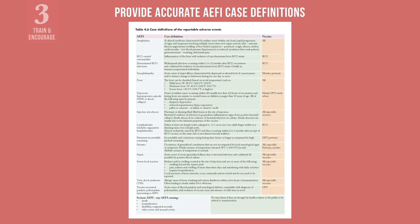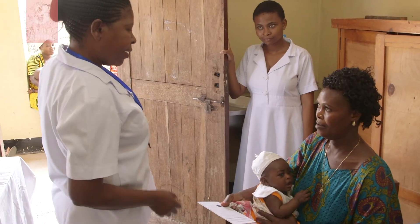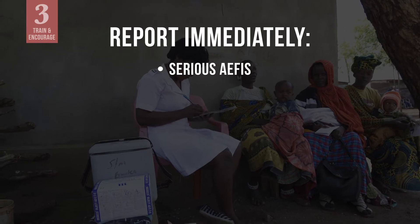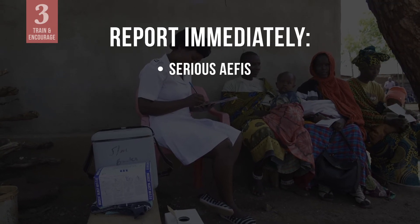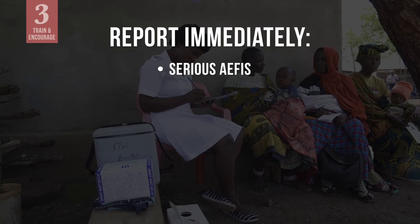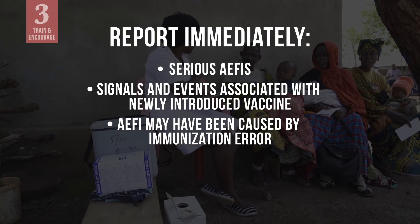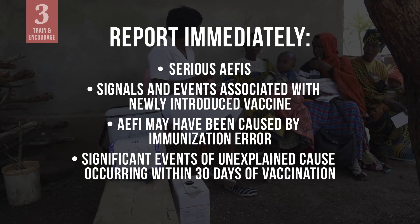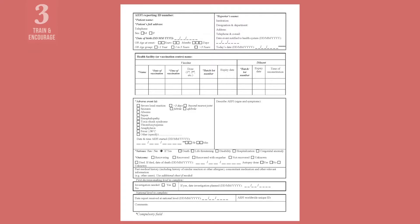Make sure that health workers are trained to detect and identify AEFIs for different vaccines. Provide accurate case definitions for each AEFI. While every AEFI case should be reported in monthly summary reports, health workers should know which ones to report immediately: serious AEFIs — events that result in death, hospitalization, persistent or significant disability or incapacity, or a congenital anomaly or birth defect; signals and events associated with a newly introduced vaccine; AEFIs that may have been caused by immunization error; significant events of unexplained cause occurring within 30 days after vaccination; and events causing significant parental or community concern.